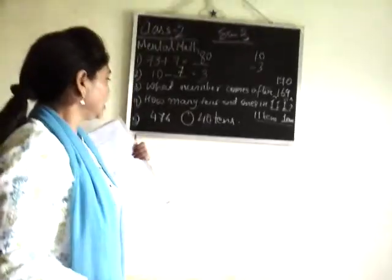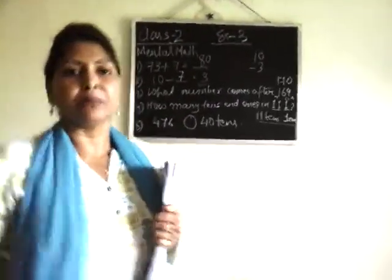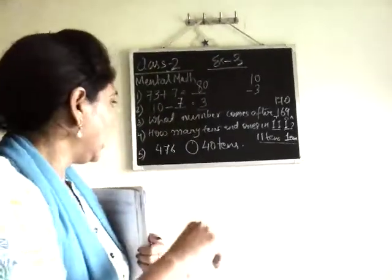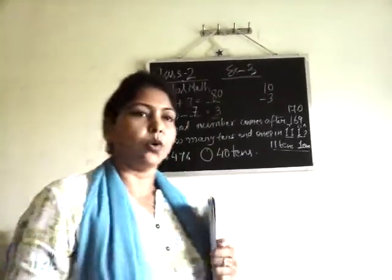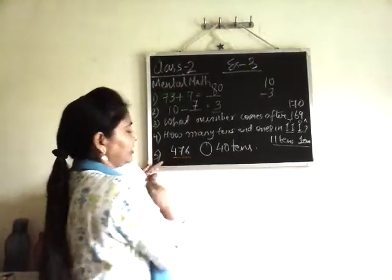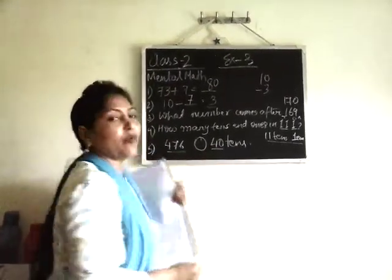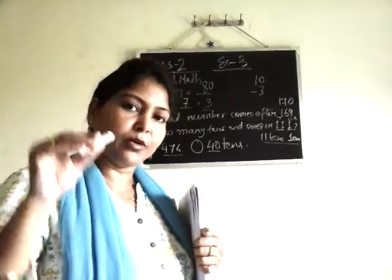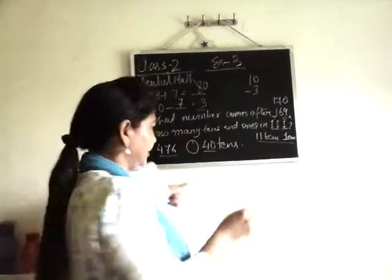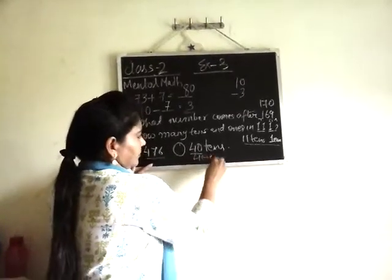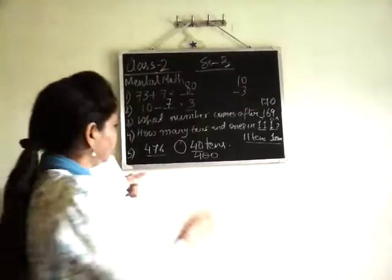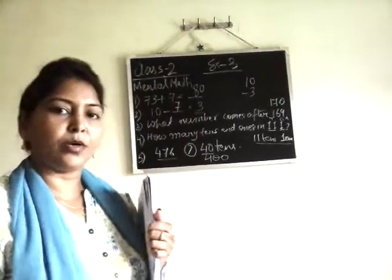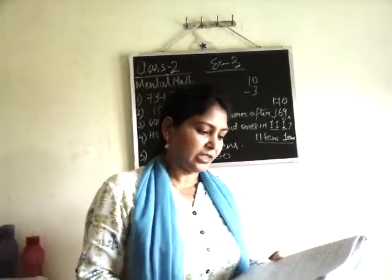Question number 5: 476 and a circle is given — you have to say which one is greater. On one side is 476 and the other is 40 tens. 40 tens means 40 times 10, which equals 400. Out of these two numbers, obviously 476 is bigger than 40 tens, which is 400.